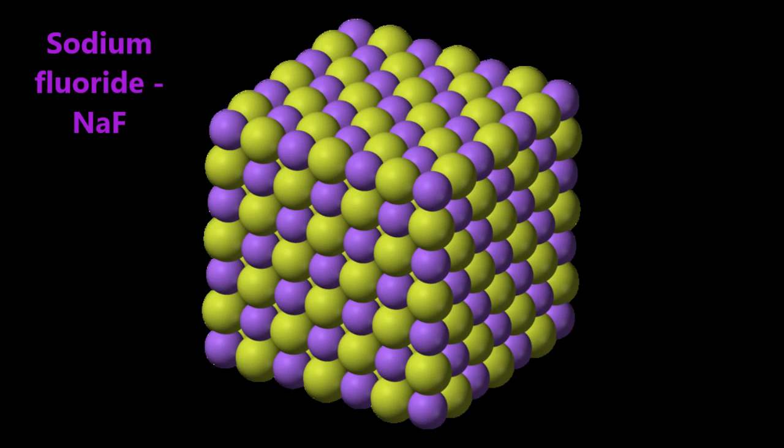Ionic bonds normally occur between a metal and a non-metal, and so you get sodium fluoride. Here is a picture of sodium fluoride. It consists of basically a cube-shaped arrangement of alternating sodium and fluorine atoms which are sticking together because each of them wants something the other one hasn't got, and they're both trying to minimize their energy state by having eight electrons in their outer shell.